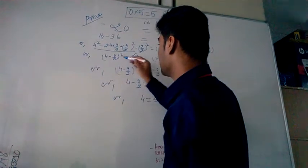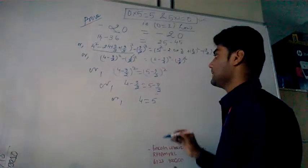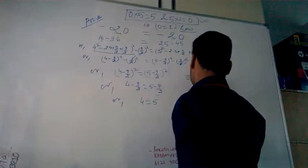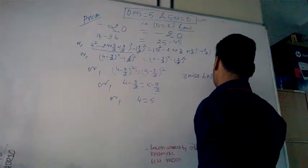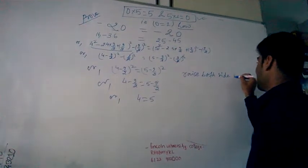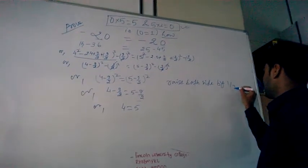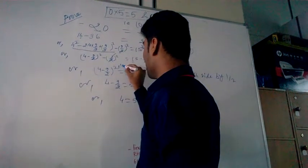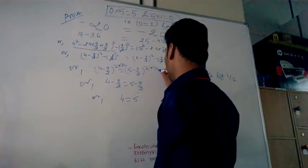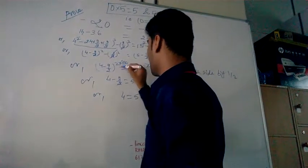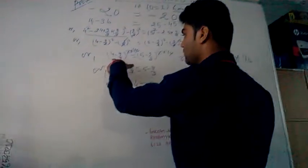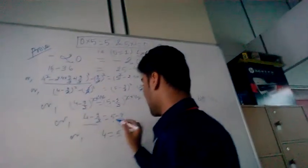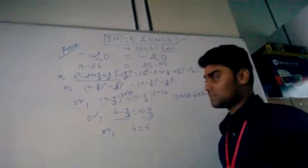As it is, I have written here. This is whole square. This is whole square. So, raise both side by 1 by 2. So, 2 into 1 by 2, into 1 by 2. So, 2 cancel, 2 cancel. Now, 4 minus 9 by 2 is here. Again, 5 minus 9 by 2 is here.